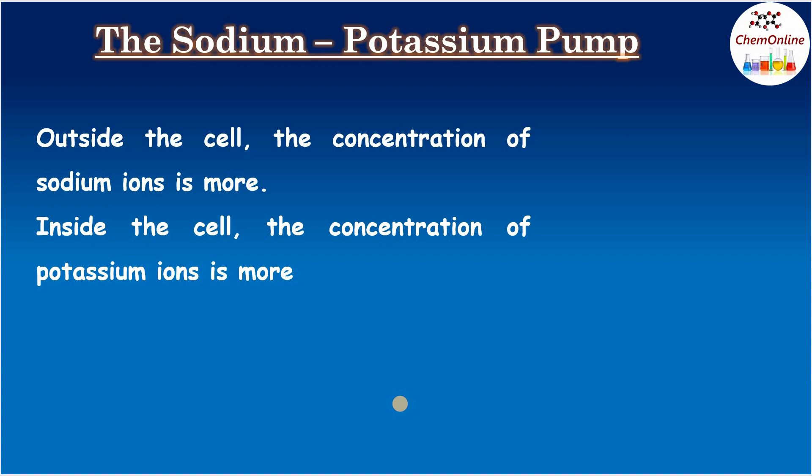Outside the cell membrane the concentration of sodium ions is high, whereas inside the cell the concentration of potassium ions is more. The sodium ion concentration within the cell has to be kept about 10 times lower than that in the extracellular fluids, whereas the potassium ion concentration inside the cell is about 30 times higher than that in the extracellular fluids.